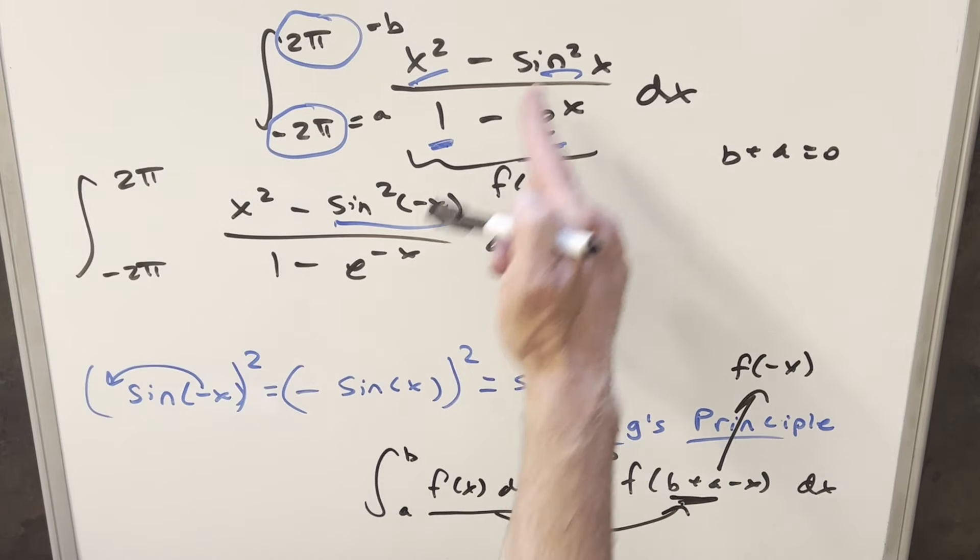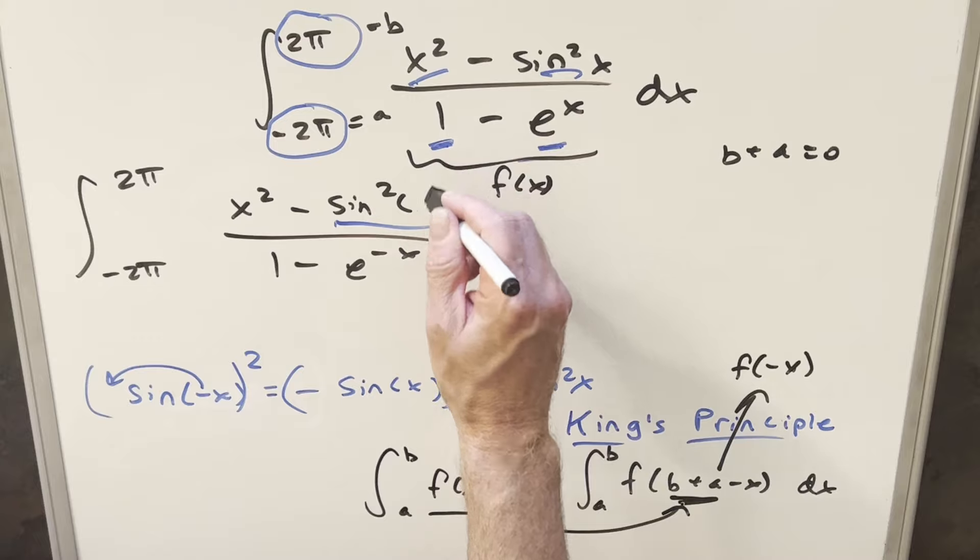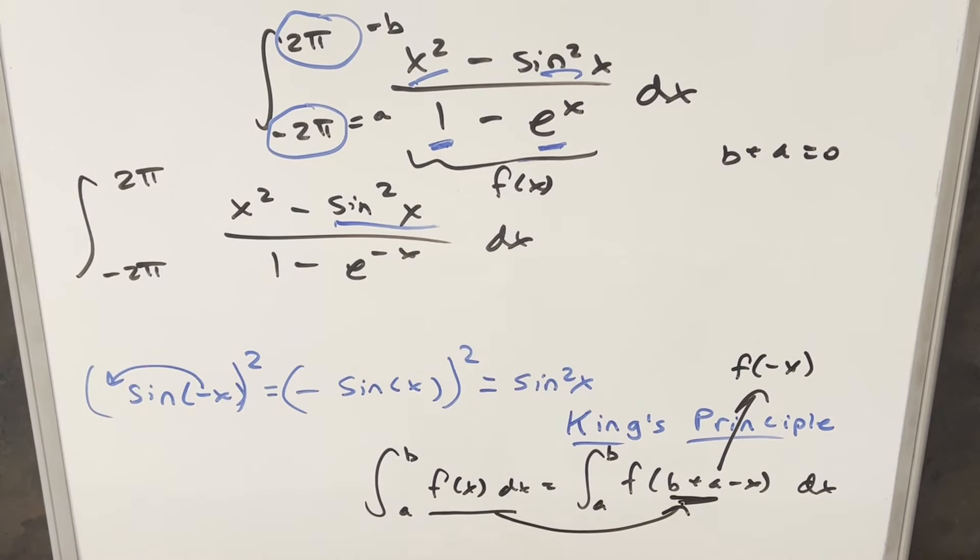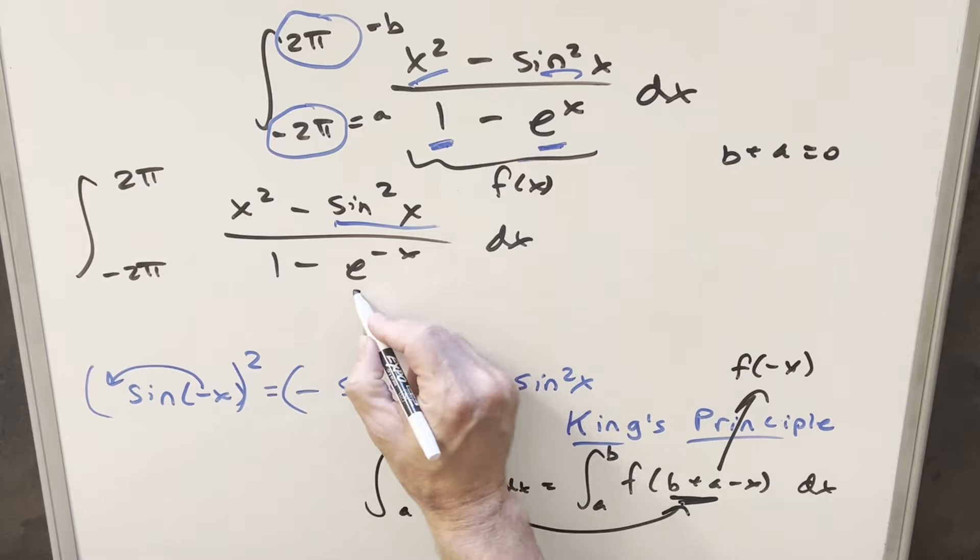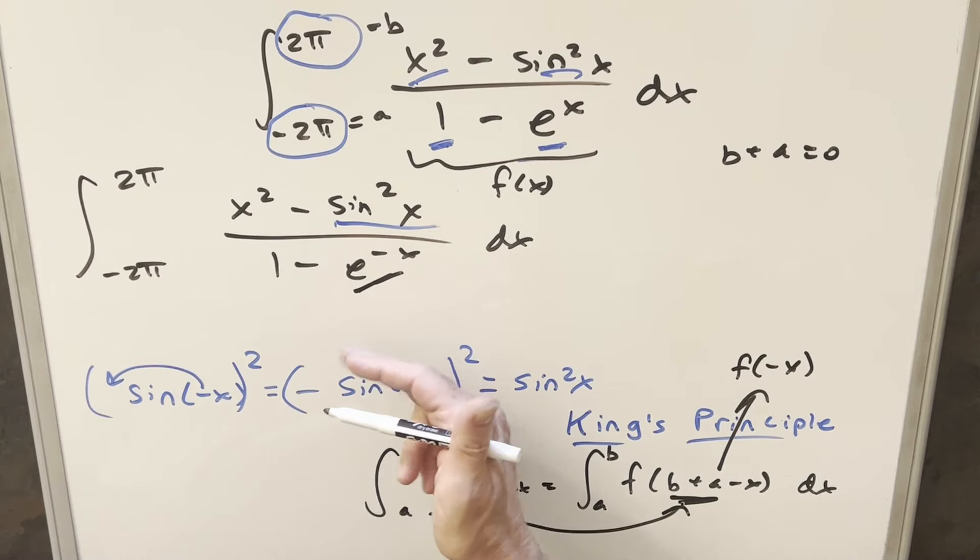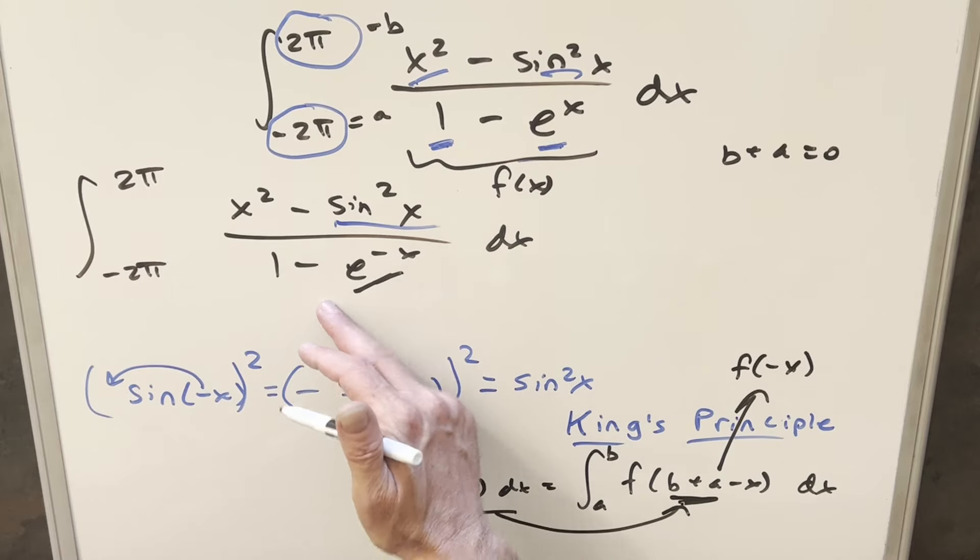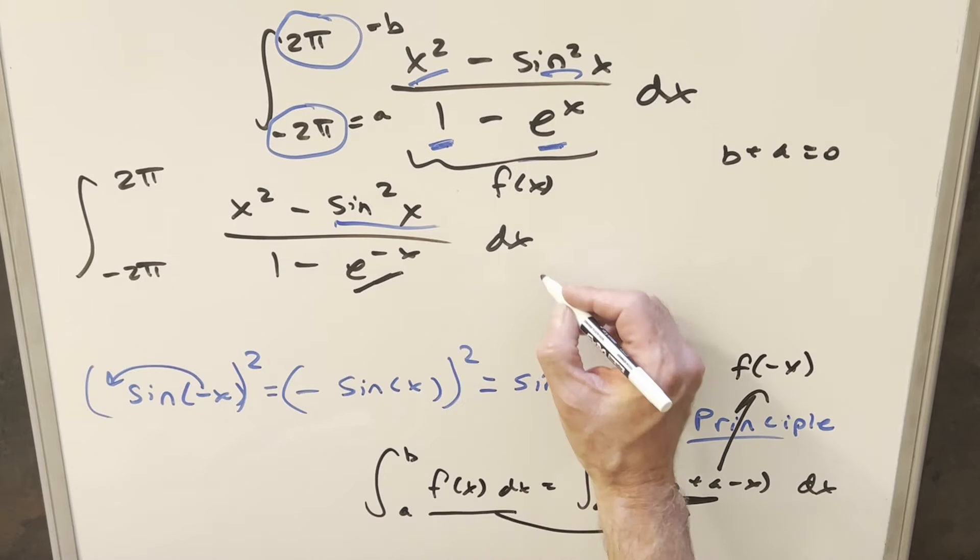So that's pretty nice. We can take this and put it back the way we had it in the original. And this just becomes sin²x. And then from here, I actually just want to fix this. Because usually with King's Principle, we like to get it back to look like the original. And then add them together and get simplification that way. So the only thing really different here from our original problem is just this e^(-x).